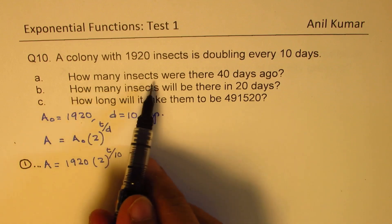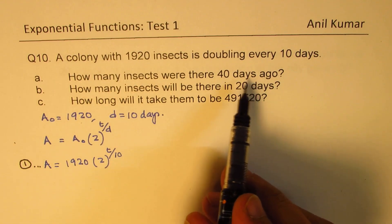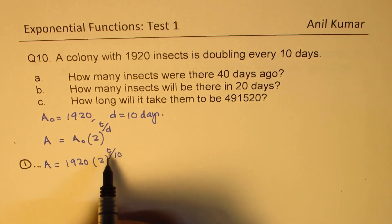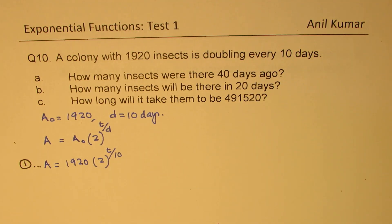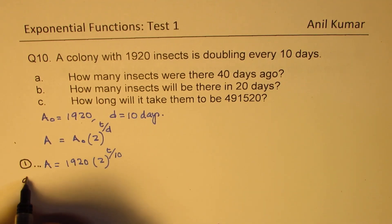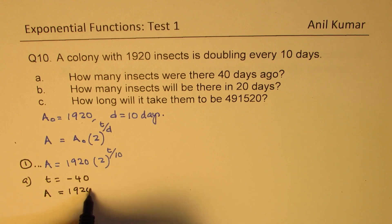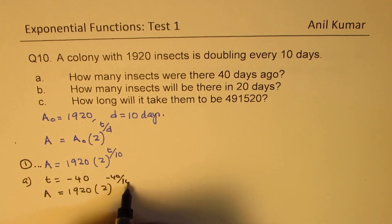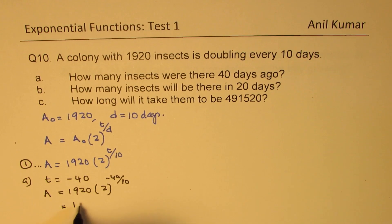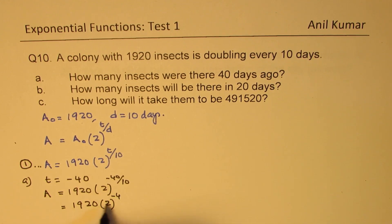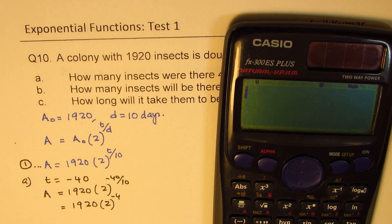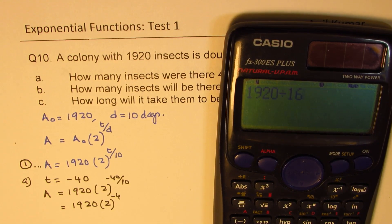Part A: how many insects were there 40 days ago? 40 days ago means T equals minus 40. So A equals 1920 times 2 to the power of minus 40 over 10, which is 1920 times 2 to the power of minus 4. Since 2 to the power of 4 is 16, we divide 1920 by 16 using the calculator, and we get 120 as our answer.